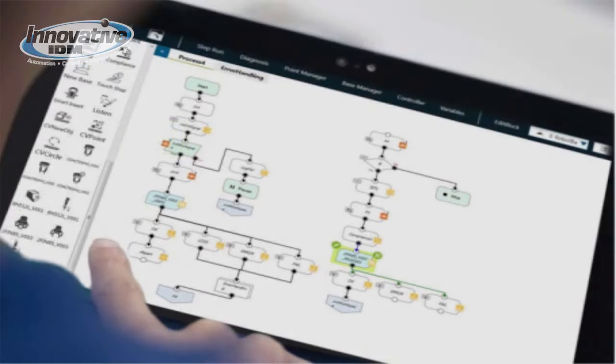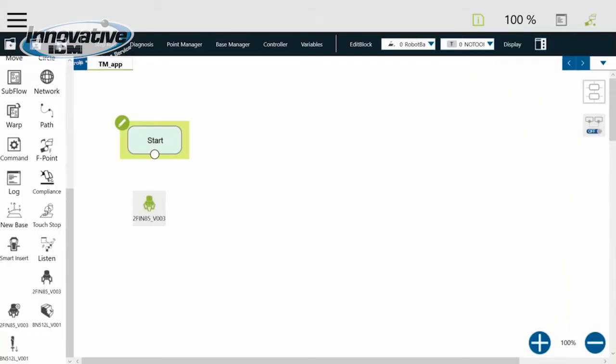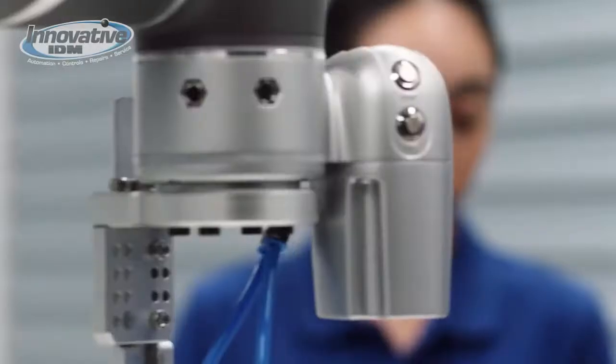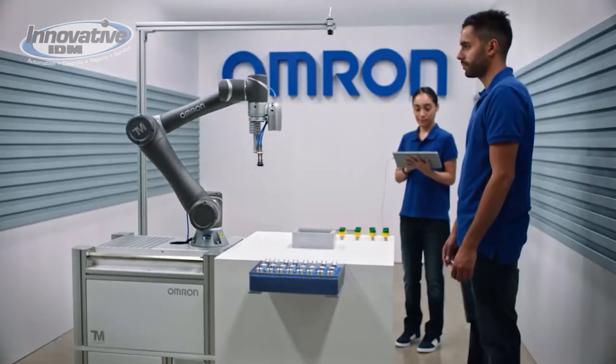Programming couldn't be easier. TM flow is a flow-based robot editing software where each function is shown graphically and features intuitive click and drag programming. Users with little to no coding experience can complete a visual pick and place program in as little as 5 minutes.